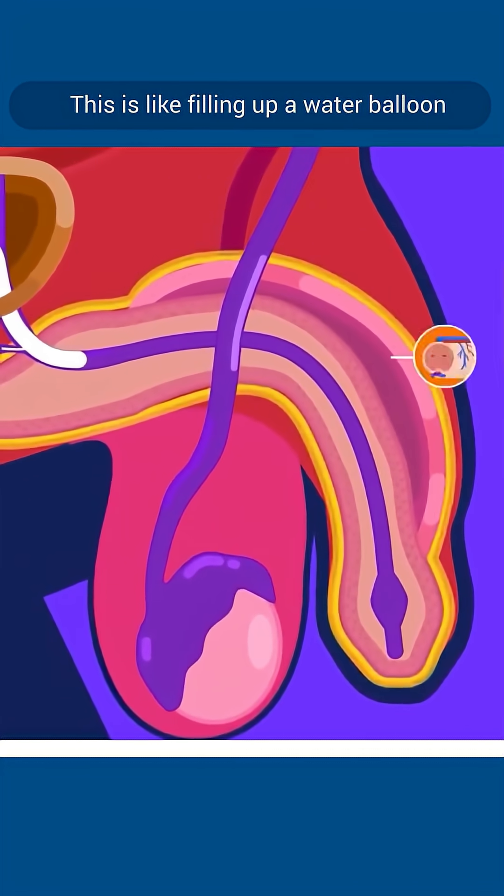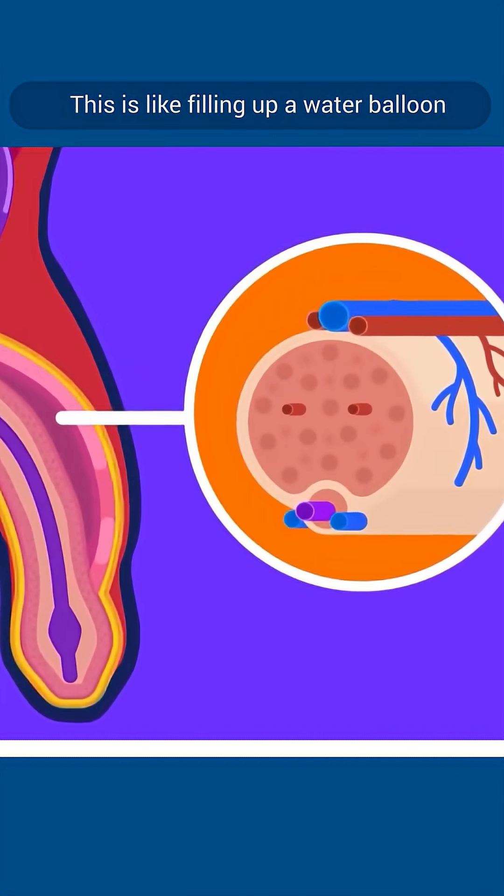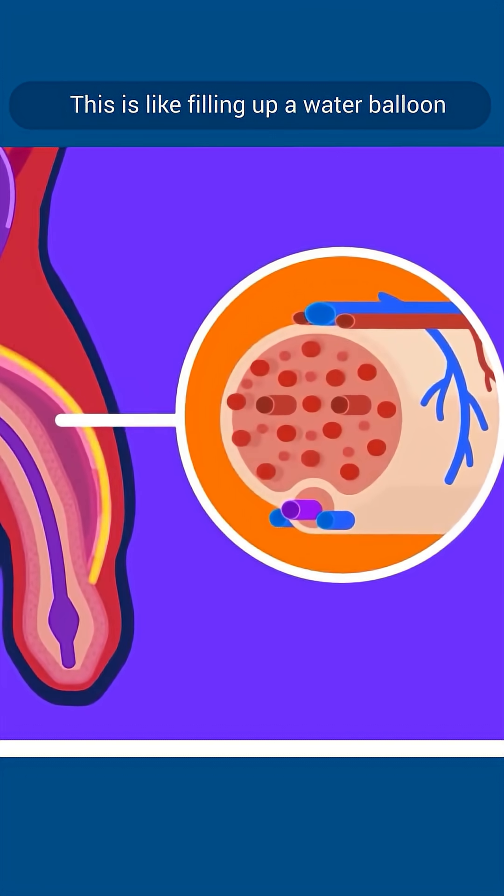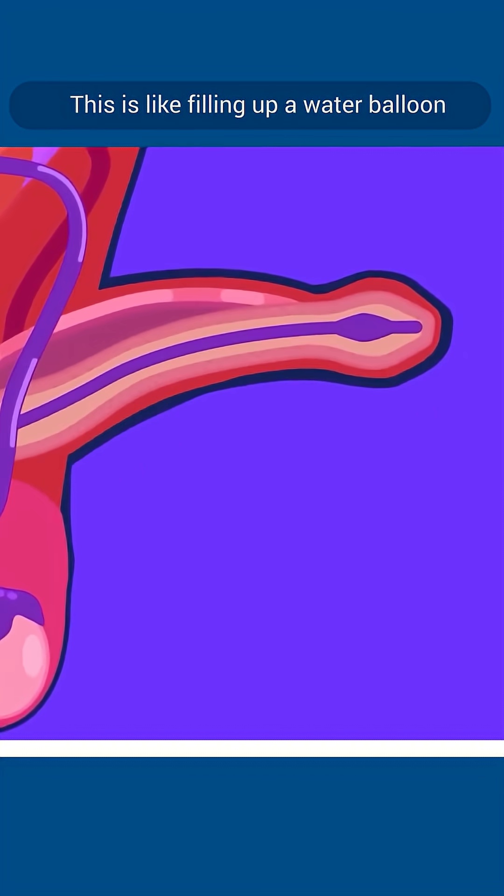The penis is an organ that contains erectile tissue with numerous blood spaces. When stimulated, the blood will fill the spaces and the penis will become erect and hard.